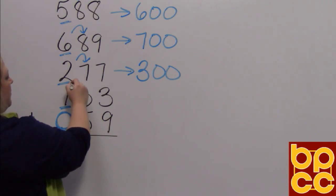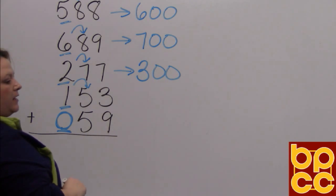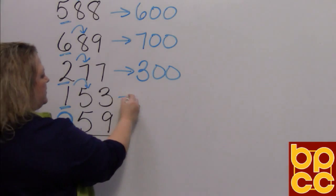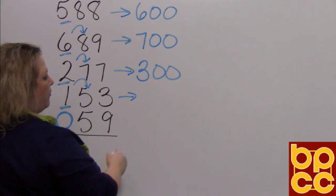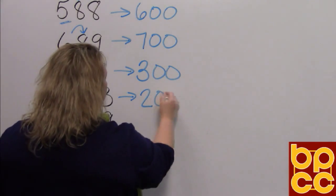I look at this number. It's the one is in the hundreds place. I look next door, and I see a five. He's five or higher, so I'm going to add one more, which makes that two, and those become zeros.